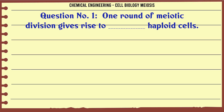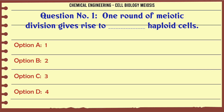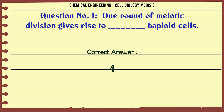One round of meiotic division gives rise to haploid cells. A. 1. B. 2. C. 3. D. 4. The correct answer is 4.